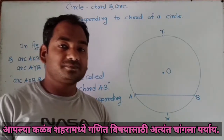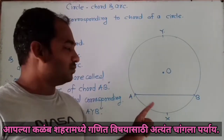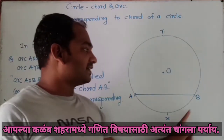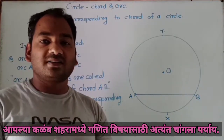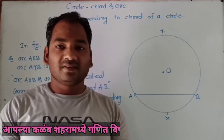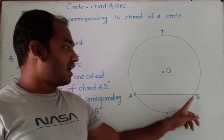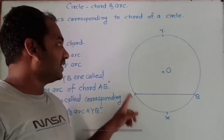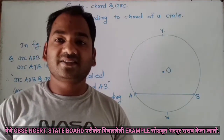Now, in the same circle, due to chord AB we get two arcs. So arc AYB and arc AXB are called corresponding arcs. Due to chord AB, two arcs are formed — arc AYB and arc AXB — and these two arcs are corresponding arcs.